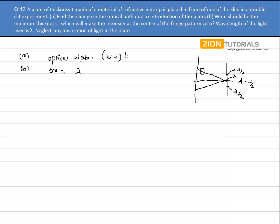So if this optical slab will create a path difference of lambda by 2, then the central maxima will be a dark fringe. So t comes out to be lambda by 2 into mu minus 1. That is my answer.